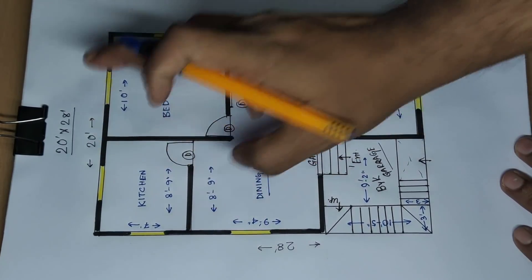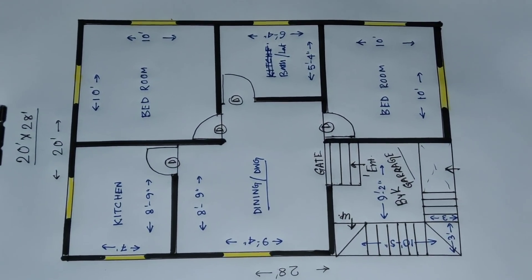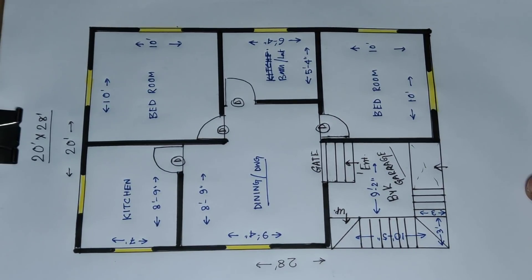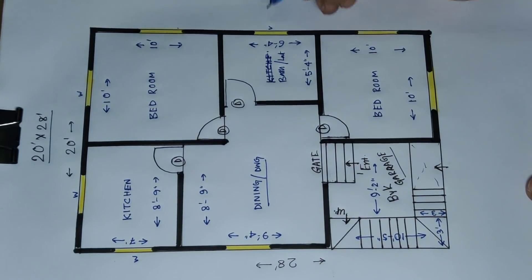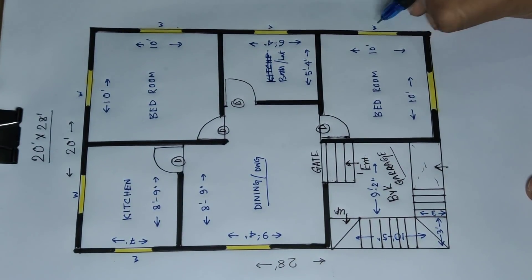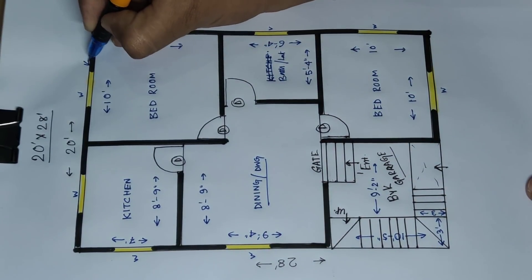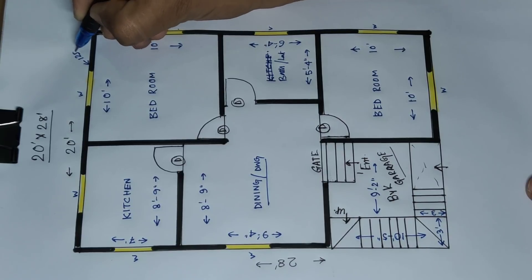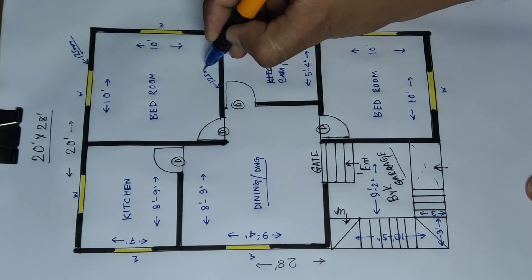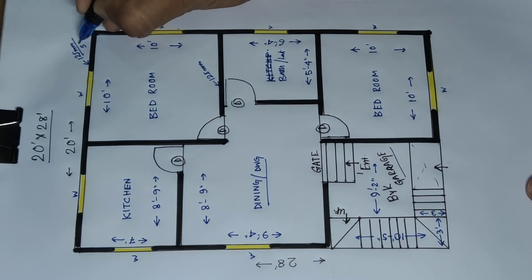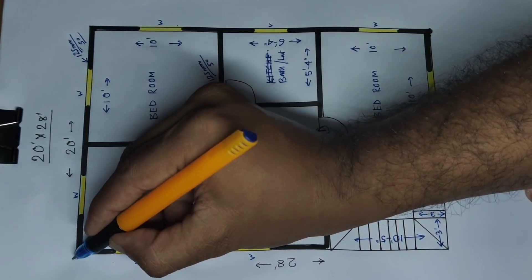This is 20x28 feet house plan, 2 BHK house plan with garage. This is ventilation, window on the side. Outside wall 125mm and inside wall 125mm, 5 inch wall. This is column — 5 inch wall.